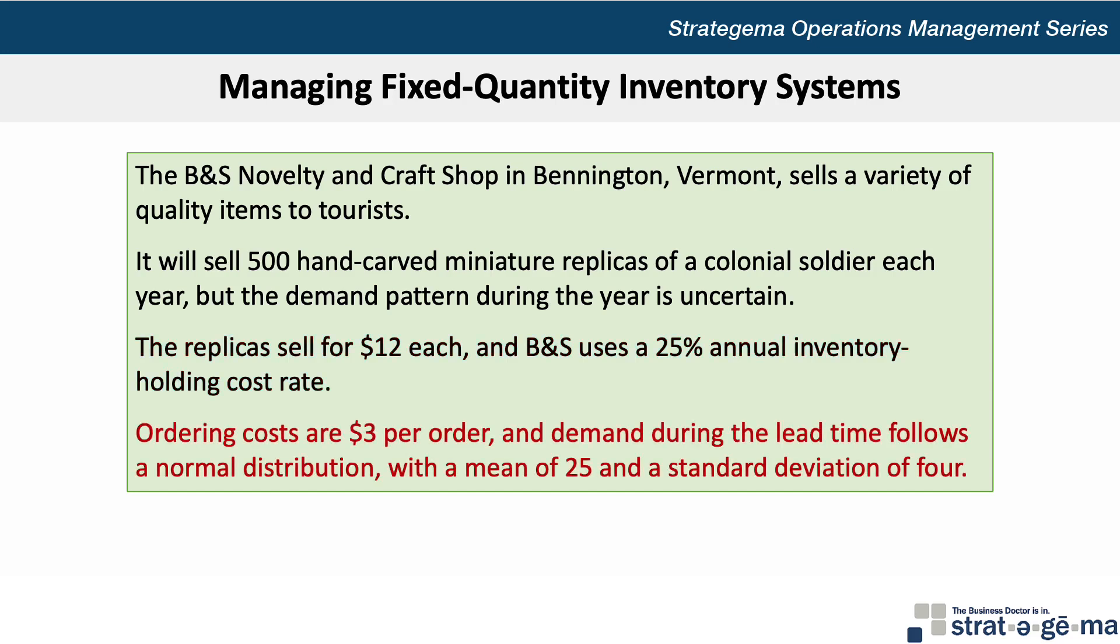Ordering costs are $3 per order, and demand during the lead time follows a normal distribution with a mean of 25 and a standard deviation of 4.